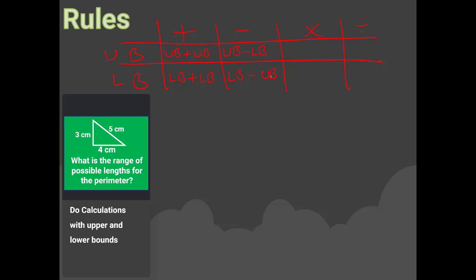For multiplying: to calculate the upper bound, multiply the upper bound by the upper bound. To calculate the lower bound, multiply the lower bound by the lower bound. For dividing: to work out the upper bound, divide the upper bound by the lower bound — this finds the biggest possible answer. To work out the lower bound, divide the lower bound by the upper bound — this finds the lowest possible answer.